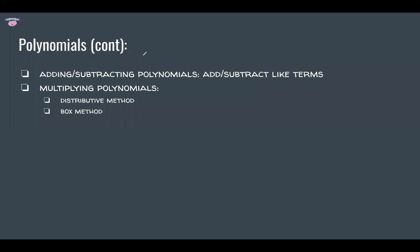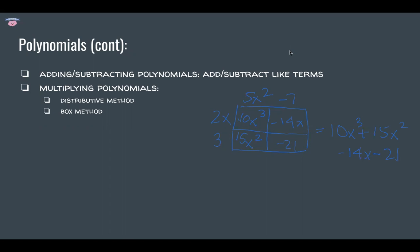The box method: using the same two polynomials, 2x plus 3 and 5x squared minus 7, you draw a box. In the box method, you multiply each term of each polynomial separately and then add everything up. Here you get 10x cubed, negative 14x, 15x squared, and negative 21. Adding everything together gives 10x cubed plus 15x squared minus 14x minus 21. If there are more terms, you just add more boxes.